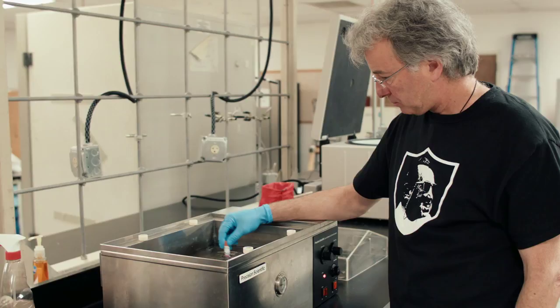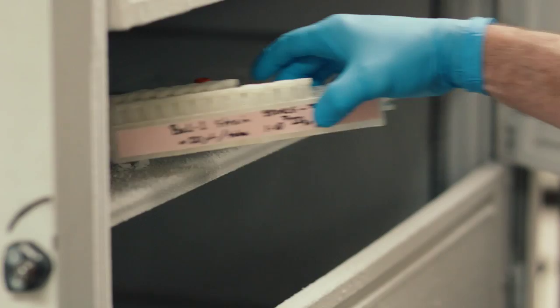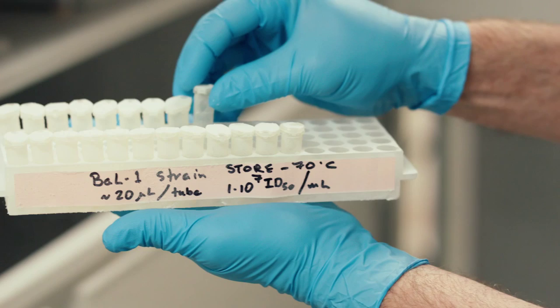So we take that, and then we aliquot it into these tiny tubes. You can see just a little bit of virus in the bottom of each of these tubes. It doesn't show up very well, because it's light colored.